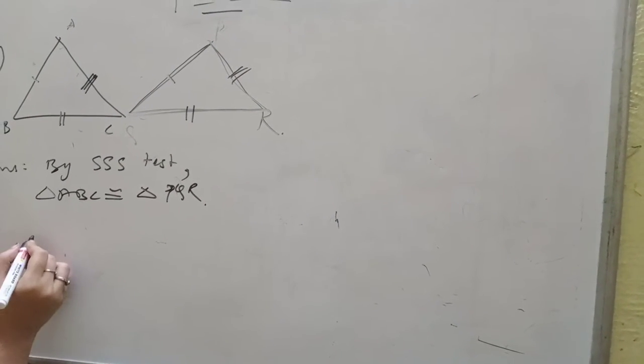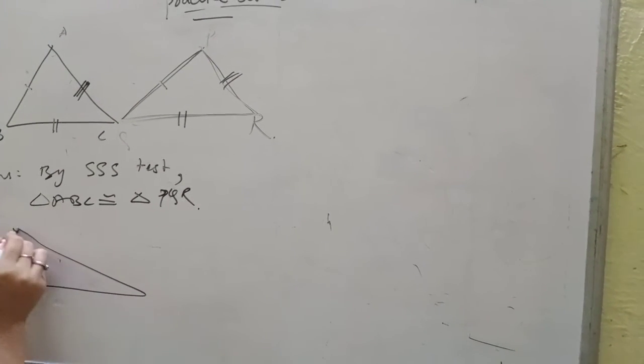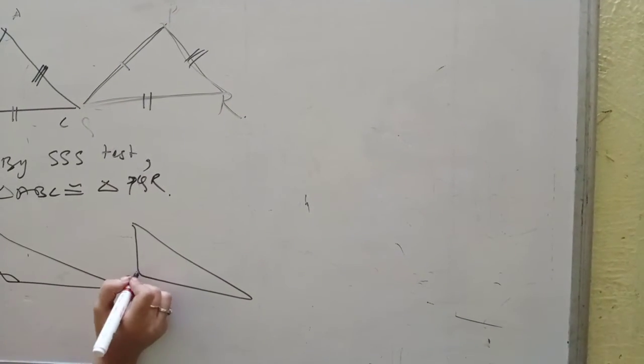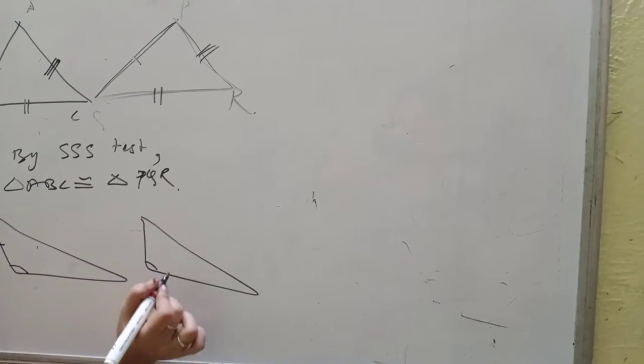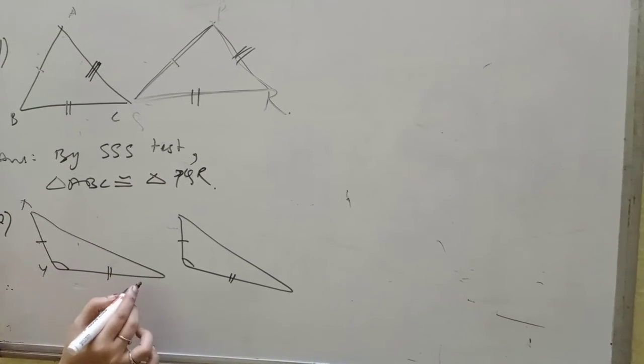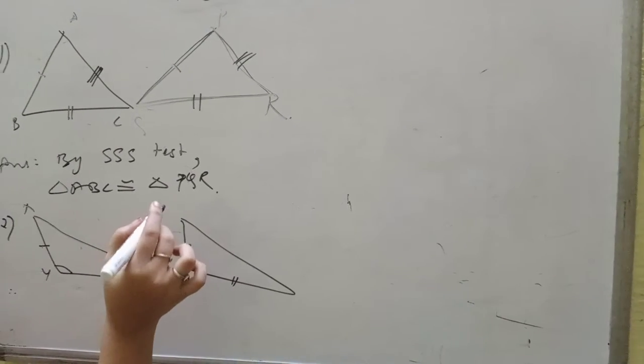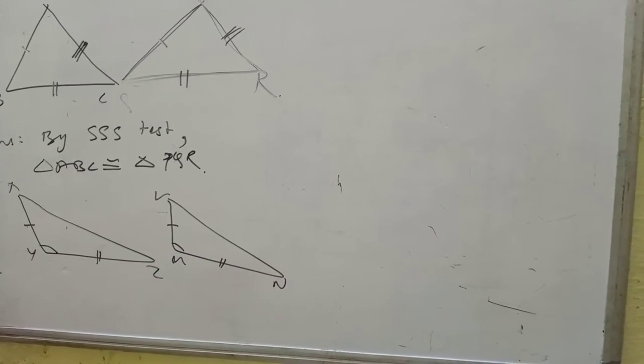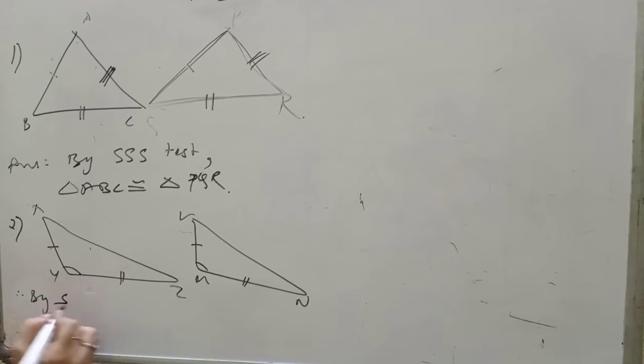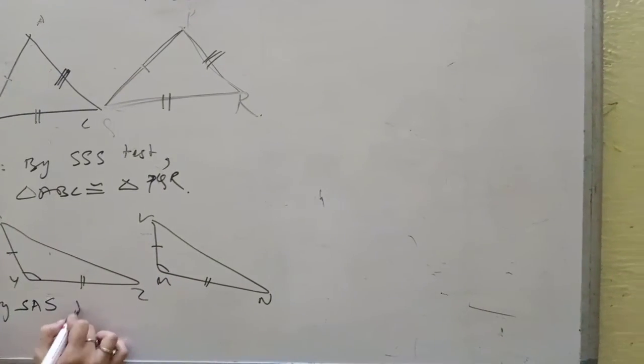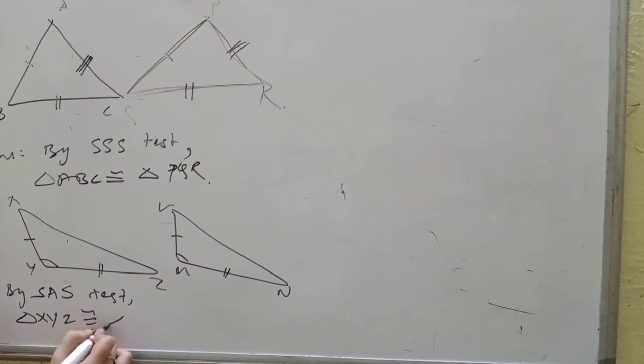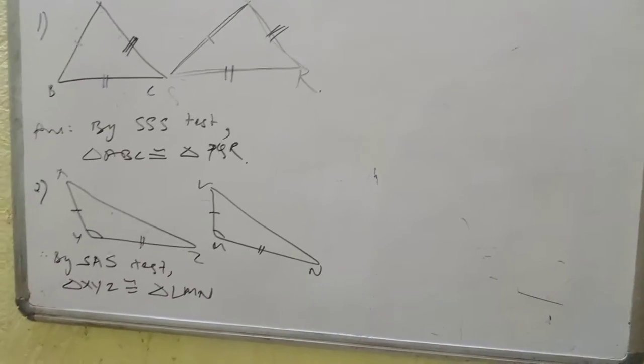Similarly, the second one. Two triangles are given. This is similar to this one, this is similar, this is similar. Triangle XYZ and triangle LMN. Now, here, first side is given. So, by side, then angle same, then side. By SAS test, triangle XYZ is congruent to triangle LMN. Understood everyone?